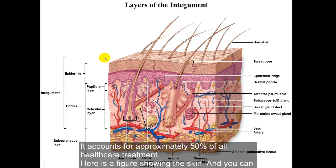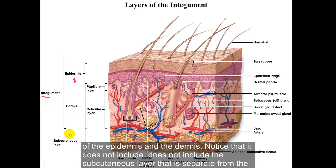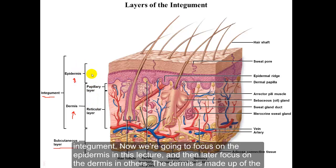Here is a figure showing the skin, and you can see that there is a lot to know about it. The general term is the integument, which consists of the epidermis and the dermis. Notice that it does not include the subcutaneous layer — that is separate from the integument. We are going to focus on the epidermis in this lecture and then later focus on the dermis in others.